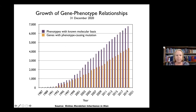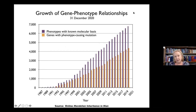To give you a little background, this slide represents the growth of gene-phenotype relationships that are cataloged in Online Mendelian Inheritance in Man, or OMIM, which I run. It's a knowledge base of human genes and genetic disorders based on the published peer-reviewed literature, and catalogs Mendelian phenotypes and the genes that cause them.